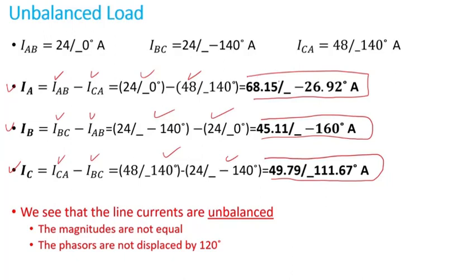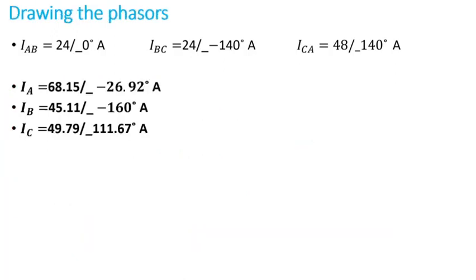We clearly see the magnitudes are not equal for the line currents, and the angles are not displaced by 120 degrees. That's because we have an unbalanced situation.